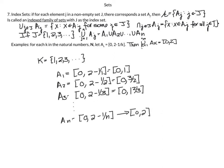First index set example: for each k in the natural numbers N, let A_k = [0, 2 − 1/k]. So A₁ = [0, 1], A₂ = [0, 3/2], A₃ = [0, 5/3]. The sets grow: 1, 1.5, 1⅔... Looking at the nth term, A_n = [0, 2 − 1/n]. As n gets large, 1/n approaches 0, so we approach [0, 2]. The claim is the union from k=1 to infinity of A_k equals [0, 2].